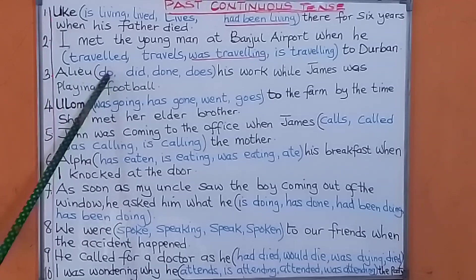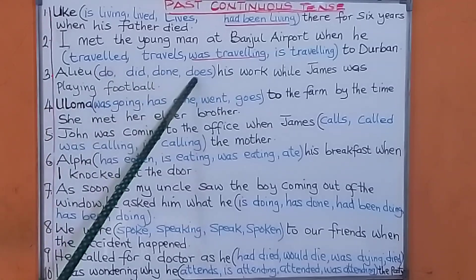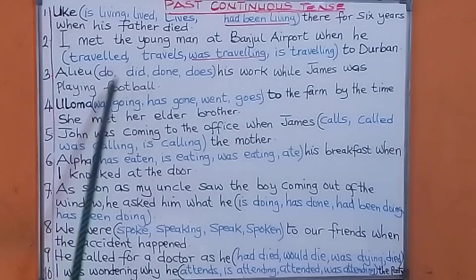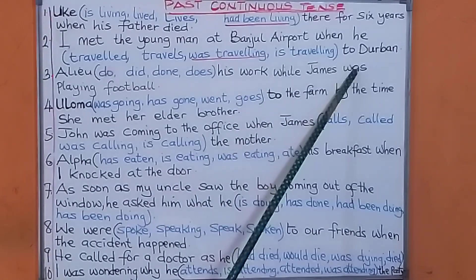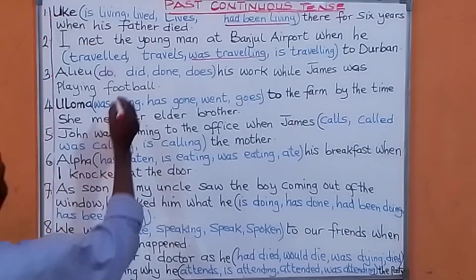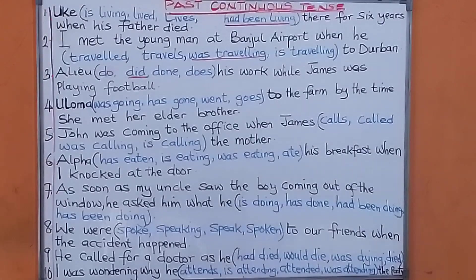Number three: Aliyah — do / did / done / does — his work while James was playing football. Remember, 'was playing football' is past, so what do you put here? Aliyah did his own work while James was playing football.